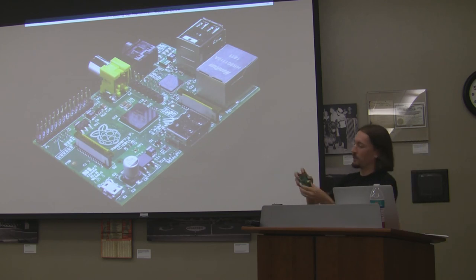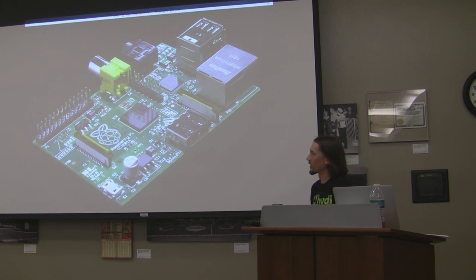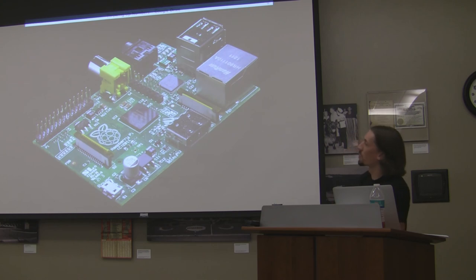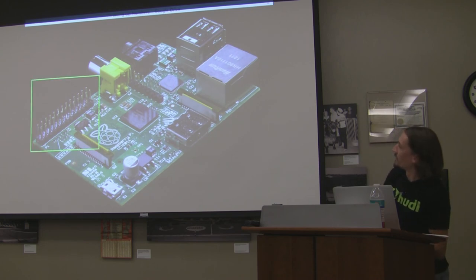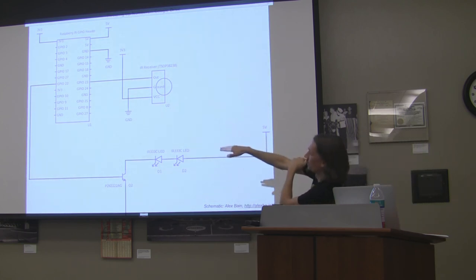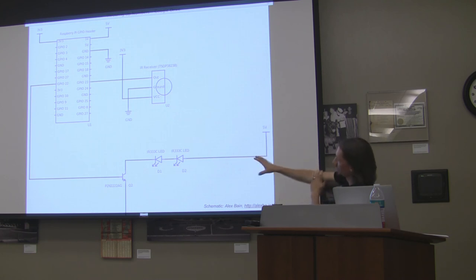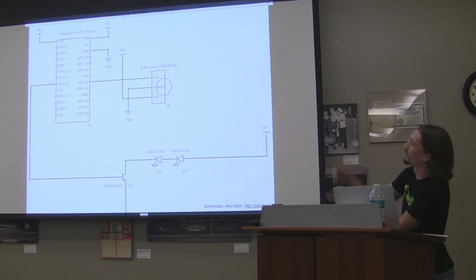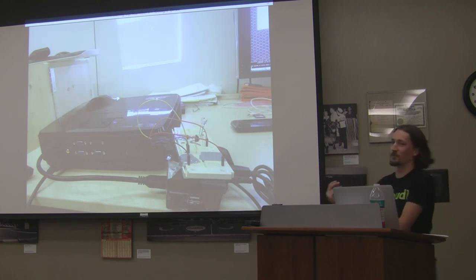One thing the Pi offers is an array of general-purpose I/O ports — GPIO. I found a guy named Alex Bain who had built a universal remote out of a Pi. He had done essentially what I wanted: simulate a remote and run it through the GPIO ports. All this is is a little IR transmitter and receiver circuit. It's a fairly simple circuit — just a couple of LEDs and a transistor. I built one which only looks slightly like a bomb. But it does the job. This is obviously a prototype, and the moment it worked for the first time, I was like, 'yeah, that's awesome, it's actually going to work.'